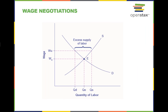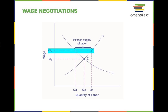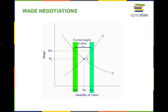This graph shows how a union can impact wages in the labor market. Without a union, the equilibrium at E would have involved the wage WE and the quantity of labor QE. However, the union is able to use its bargaining power to raise the wage to WU. The result is an excess supply of labor for union jobs — that is, the quantity of labor supplied, QS, is greater than firms' quantity demanded for labor, QD.